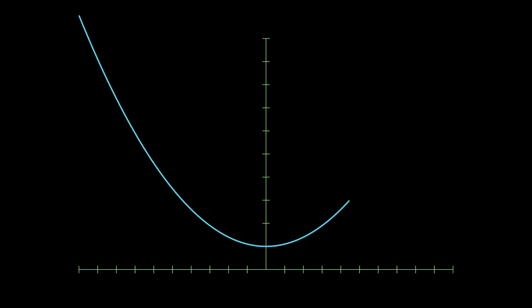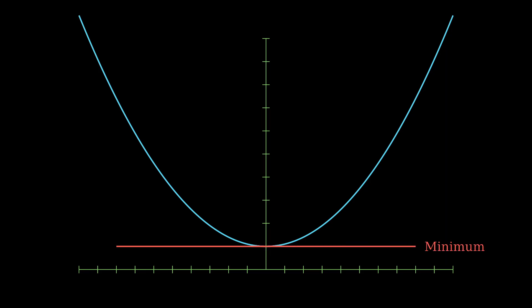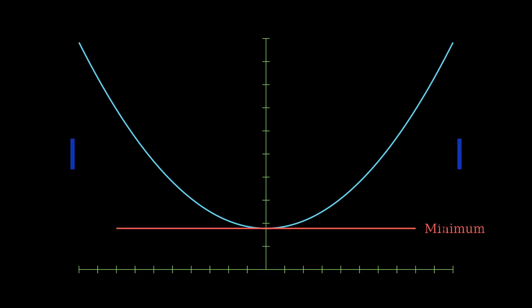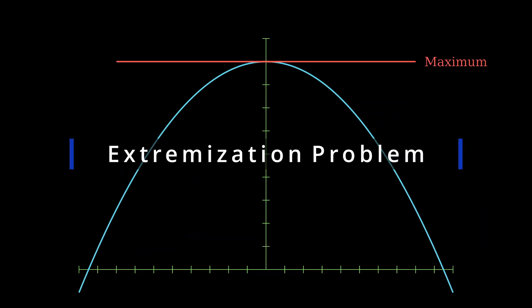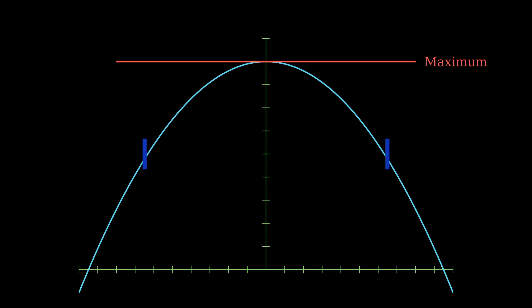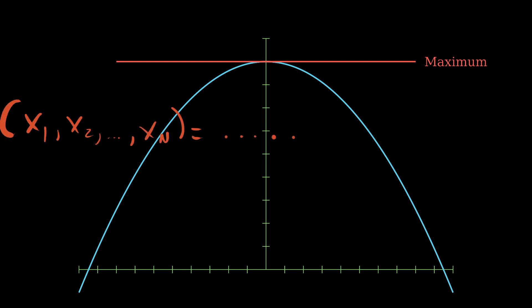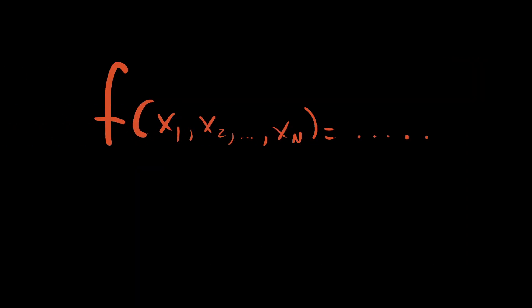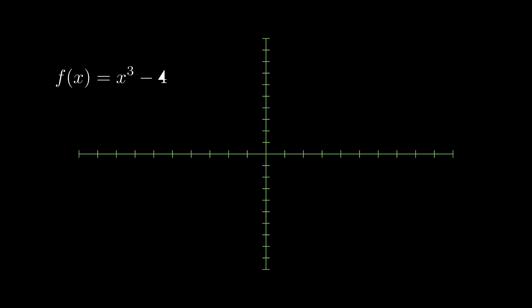In mathematics, the problem of finding minimal or maximal values of a function is called an extremization or an optimization problem. These problems are extremely well-studied, and a rich theory exists that gives us step-by-step solutions for how to find the optimal points in many cases, especially when the functional form of the function we wish to extremize is known.